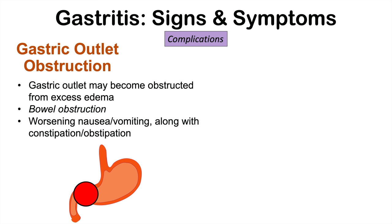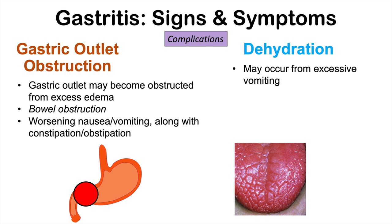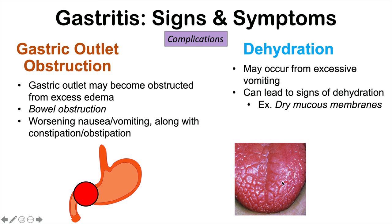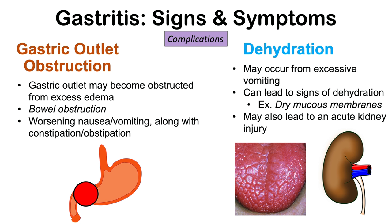Dehydration can also occur in some patients from excessive vomiting. If a patient has very severe gastritis with a lot of nausea and vomiting, they can become dehydrated. This can lead to signs of dehydration like dry mucous membranes. This dehydration can then lead to an acute kidney injury, because there's not enough fluid volume getting to the kidneys.